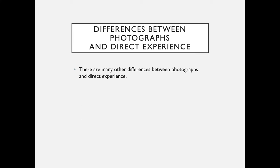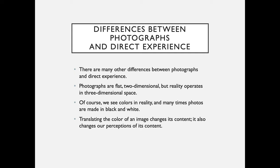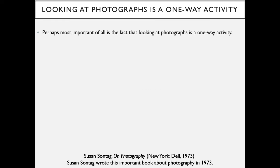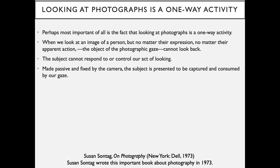There are many other differences between photographs and direct experience. Photographs are flat, two-dimensional, but reality operates in three-dimensional space. We see colors in reality, and many times photos are made in black and white — translating the color of an image changes its content and our perceptions of it. Perhaps most important of all is the fact that looking at photographs is a one-way activity. When we look at an image of a person, no matter their expression or apparent action, the object of the photographic gaze cannot look back. The subject cannot respond to or control our act of looking. Made passive and fixed by the camera, the subject is presented to be captured and consumed by our gaze.